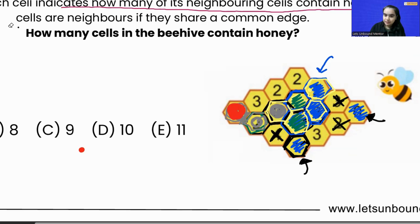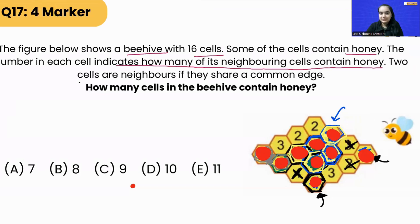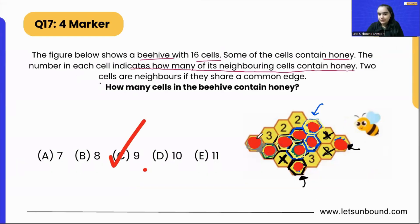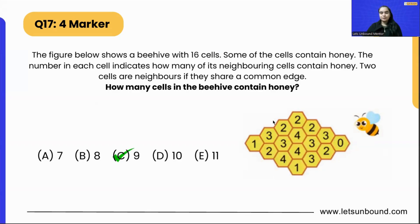Now let's count all the cells that contain honey: one, two, three, four, five, six, seven, eight, and nine. So we got our answer — that is nine, option C! Nine cells contain honey and the rest will be empty. We started with zero to make the question easier, then moved to four, but saw four cannot contain honey. That is how we arrived at the answer: nine.